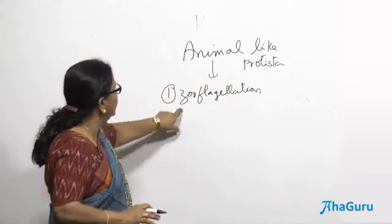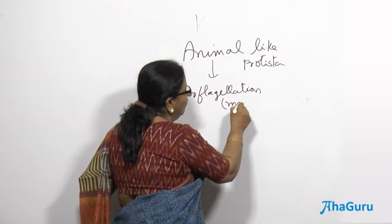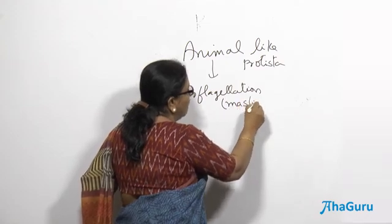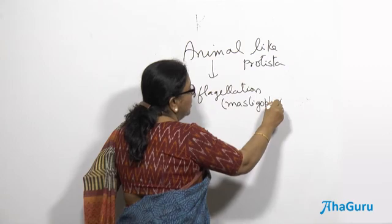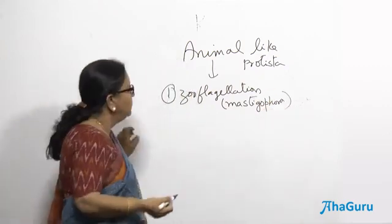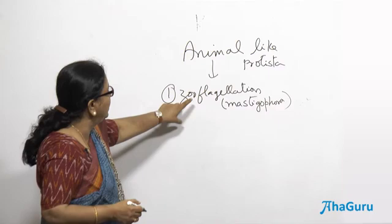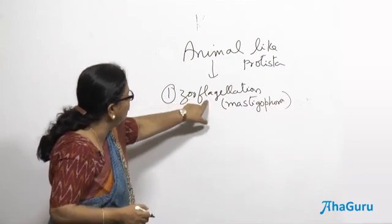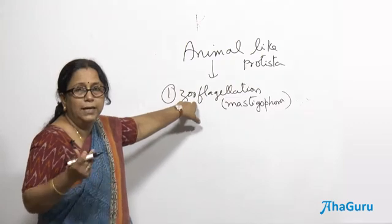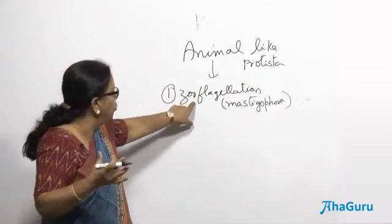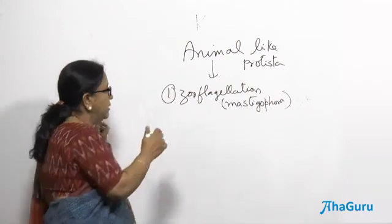One group is called zooflagellates, sometimes called mastigophora or zoomastigophora. As the name indicates, they have flagella and they are heterotrophs, which means they have a holozoic type of nutrition. The best example for a zooflagellate is trypanosoma.